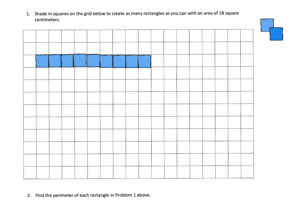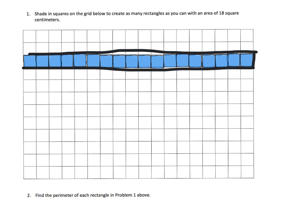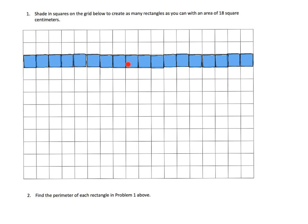I'm lining them up right here, and once we've created the rectangle we're supposed to find its perimeter. I'm going across here — all 18 — and there we go. So our rectangle has this edge, this edge, this edge, and that edge.